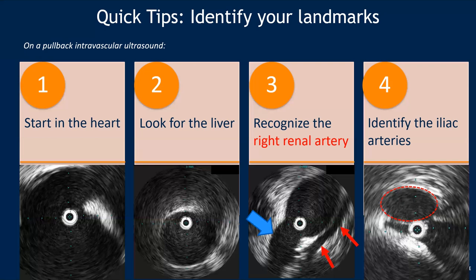Finally, identify the iliac arteries. Notice how in steps two through four we're talking about extravascular structures — I find this helps with orientation better than intrinsic cava architecture or identifying the inflow veins. Your vein on IVUS may just look like a long tapered tube from a hard-to-access site, with nothing intrinsic about the vein that you can identify. And sometimes it may be difficult to identify those inflow veins to orient you on IVUS.